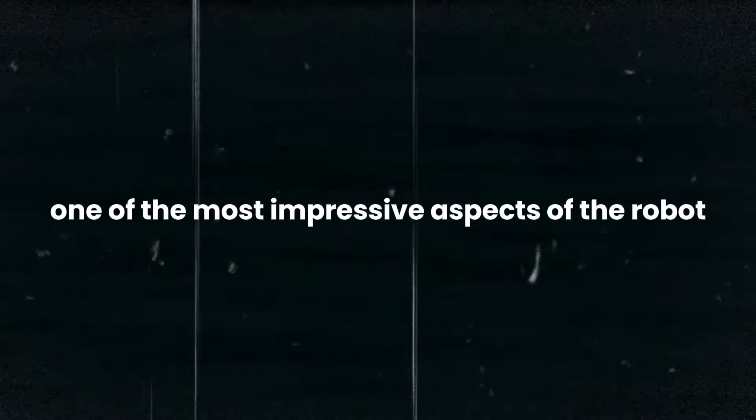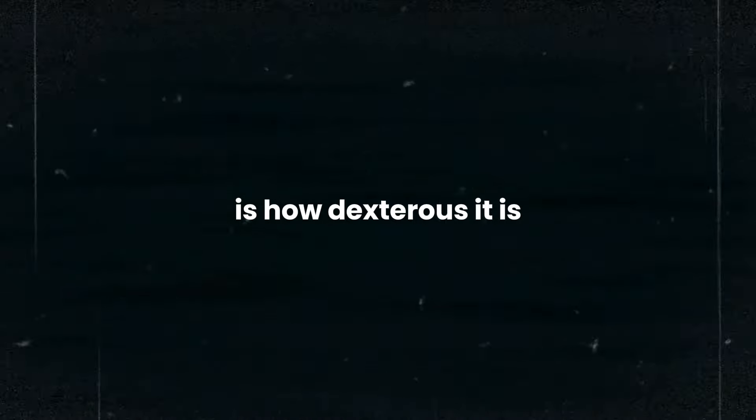One of the most impressive aspects of the robot is how dexterous it is. It has 24 different ways it can position and adjust its hands, allowing it to interact with objects in a very fluid and natural way. It uses a special type of AI system that can instantly translate what it sees into the right movements for its hands and arms. And this is how it's able to respond quickly and smoothly to what is happening around it.